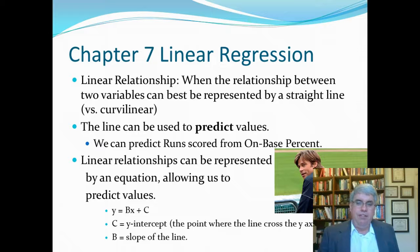So these linear relationships can be represented by an equation allowing us to predict values. Now, what do we mean by a linear equation? Typically, it's in the form of y equals bx plus c, or y is the number of runs scored. We can predict that, our predictor variable, from some number times x, the on-base percentage, plus some constant.